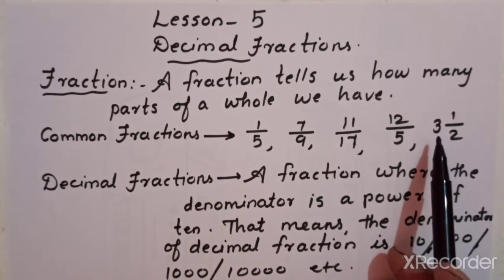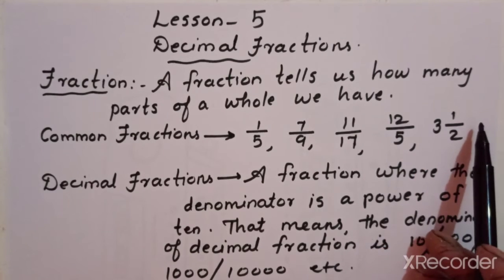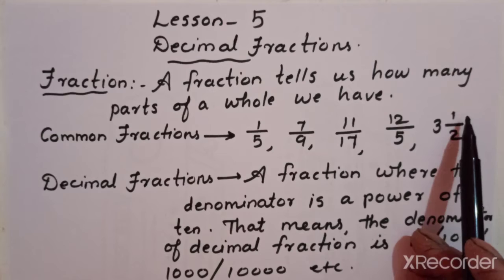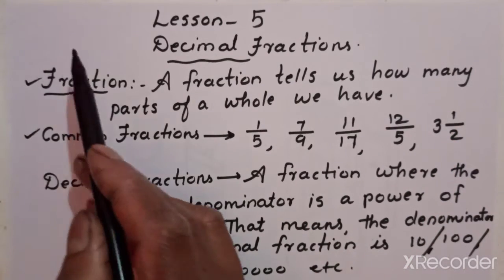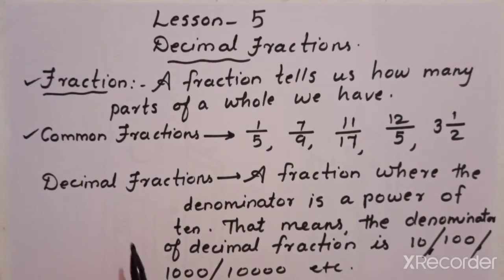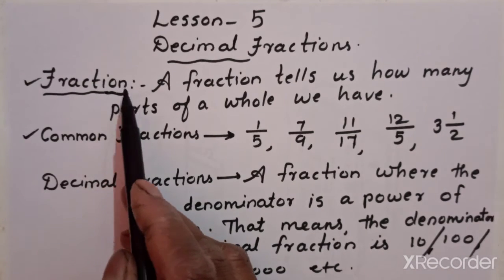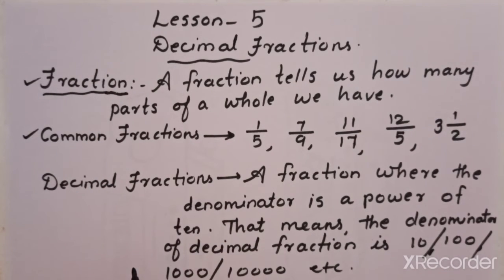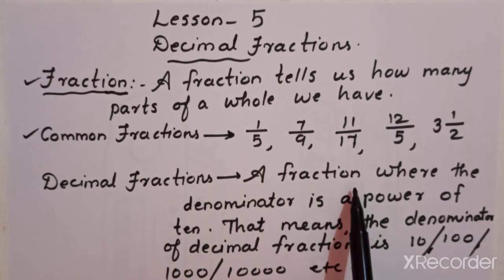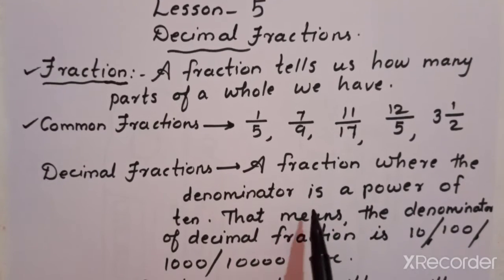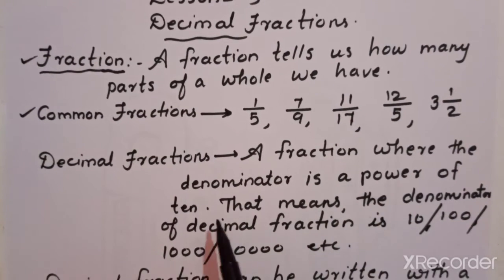This mixed number is also greater than one because it is already three whole plus one-upon-two part of the fourth one. So these are the common fractions, which we have already studied. Decimal fraction is also a kind of fraction only.